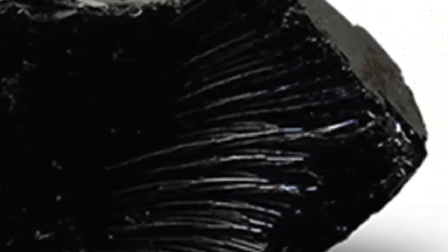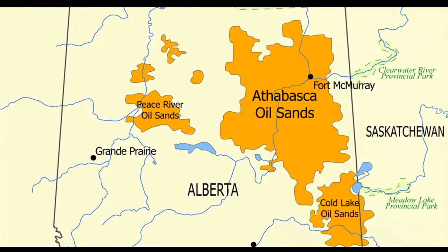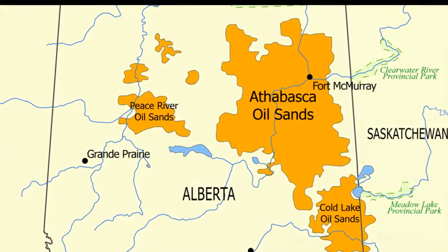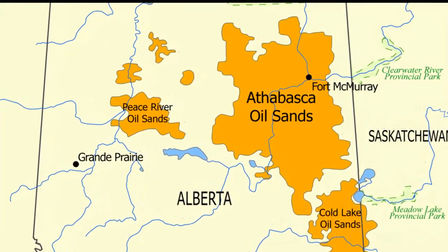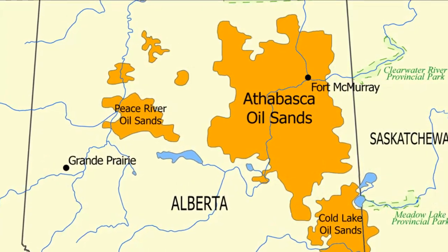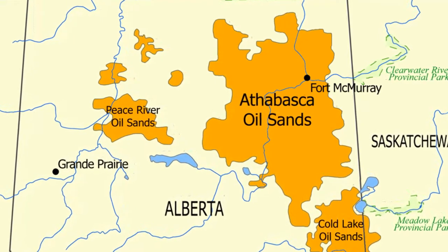Obtaining oil from oil sand has significant environmental drawbacks. Substantial land disturbance is associated with mining huge quantities of rock and sediment. Moreover, large quantities of water are required for processing, and when processing is completed, contaminated water and sediment accumulate in toxic disposal ponds.